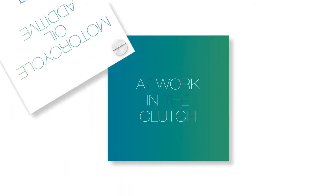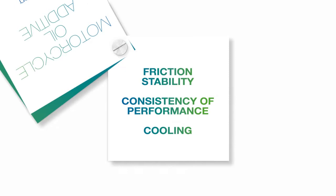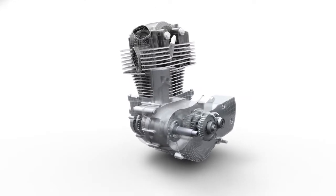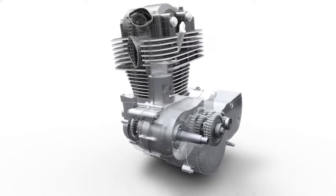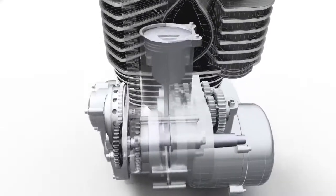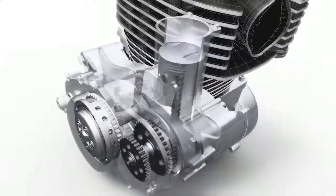Motorcycle oil additives at work in the clutch. Unlike a car which has a dry clutch, the clutch in a motorcycle is a series of metal plates, each separated by a friction plate, all immersed in oil.